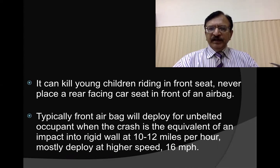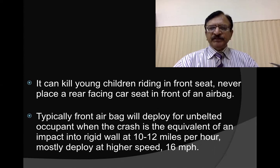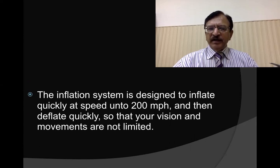A typical front airbag is deployed for unbelted occupants when the crash exceeds a set threshold — various vehicles are graded so that the severity of impact determines airbag deployment at various speed settings. The inflation system is designed to inflate quickly at speeds up to 200 miles per hour, and then deflates quickly so that the person's vision and movement are not limited.